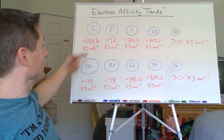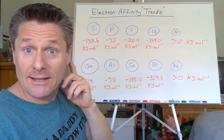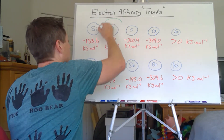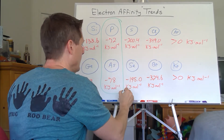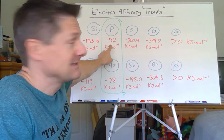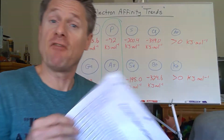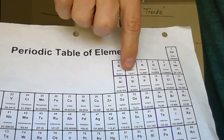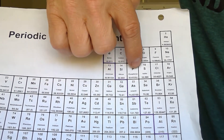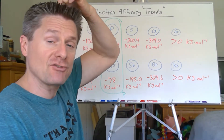Moving down a column, you can see it becomes less favorable in most cases — not a perfect trend. What I want to look at is what causes that big jump. It's definitely less favorable to gain an electron for the pnictogens column. Something must be funky about the electron configuration when you get to phosphorus, arsenic, antimony, bismuth — trying to add an electron there is way harder than the others. So let's look at the electron configuration and figure that out.